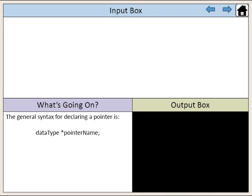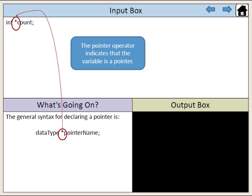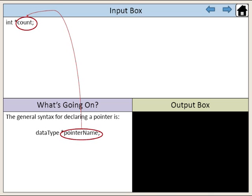To declare a pointer, first provide a data type, followed by an asterisk attached to the beginning of the pointer's name. The asterisk is called a pointer operator, which simply indicates that the variable is a pointer. Next, provide the pointer's name, which follows the same rules as naming variables.